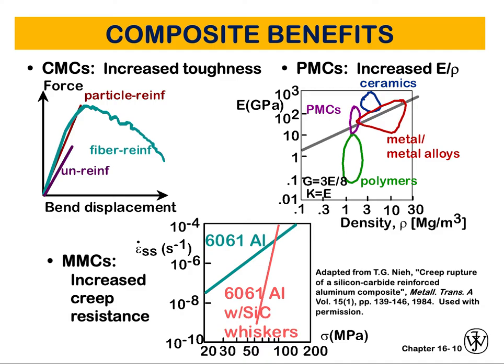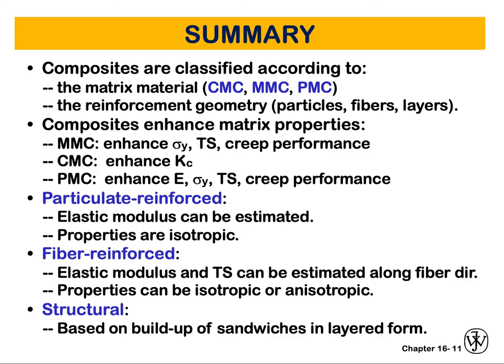You need to look at the application and consider composites when searching for the right material that would be useful for your implementation. In summary, composites are classified according to the matrix material. The first letter denotes the matrix — so in a two-phase composite, the first designation is the matrix and the others are the dispersed phase. For example, in ceramic-metal-ceramic, the ceramic is the matrix and the metal is dispersed; in metal-metal-ceramic, the metal is the matrix phase.